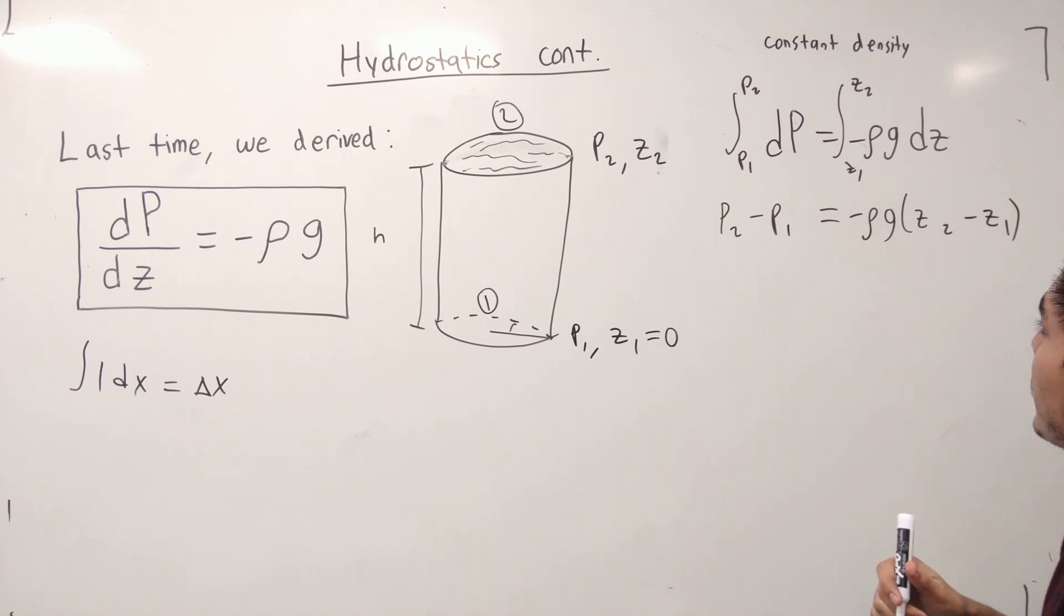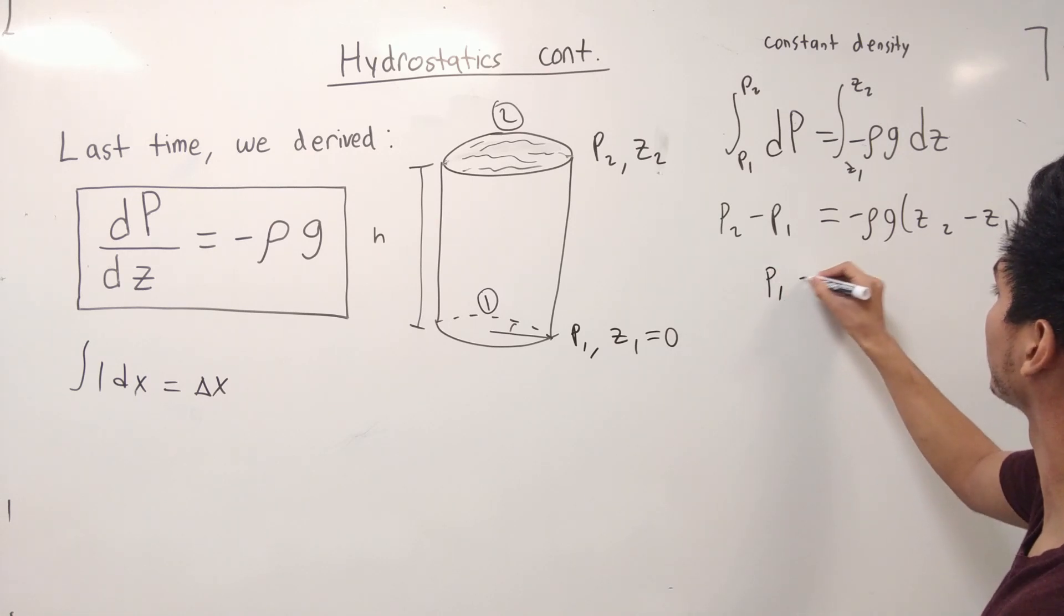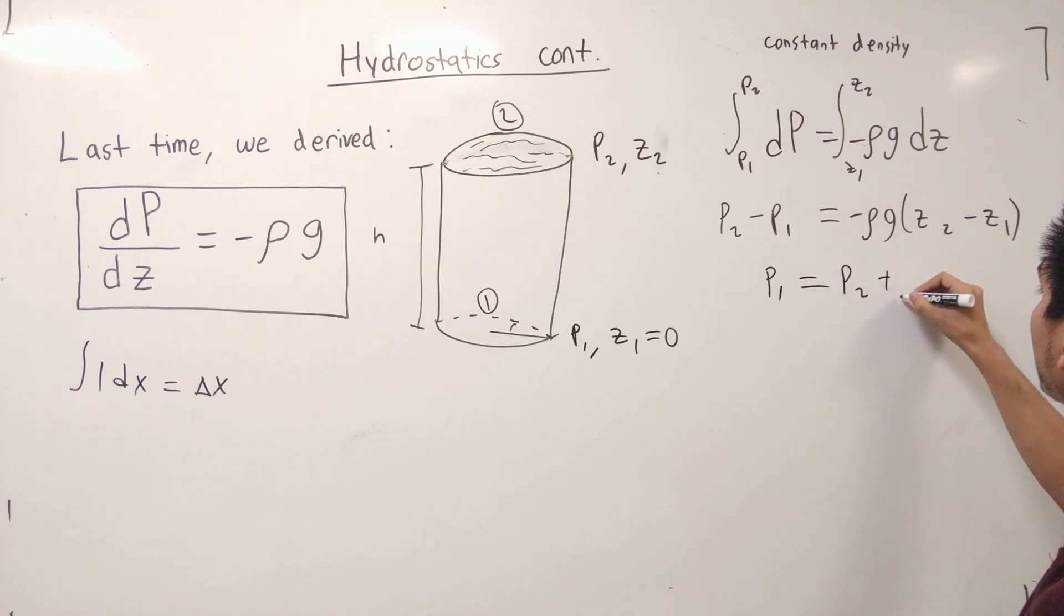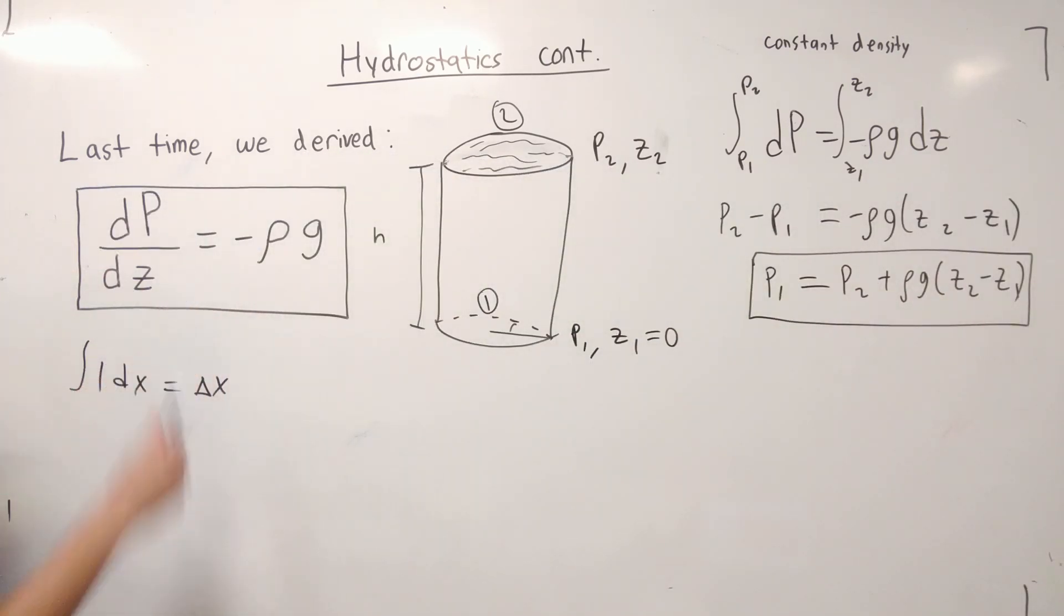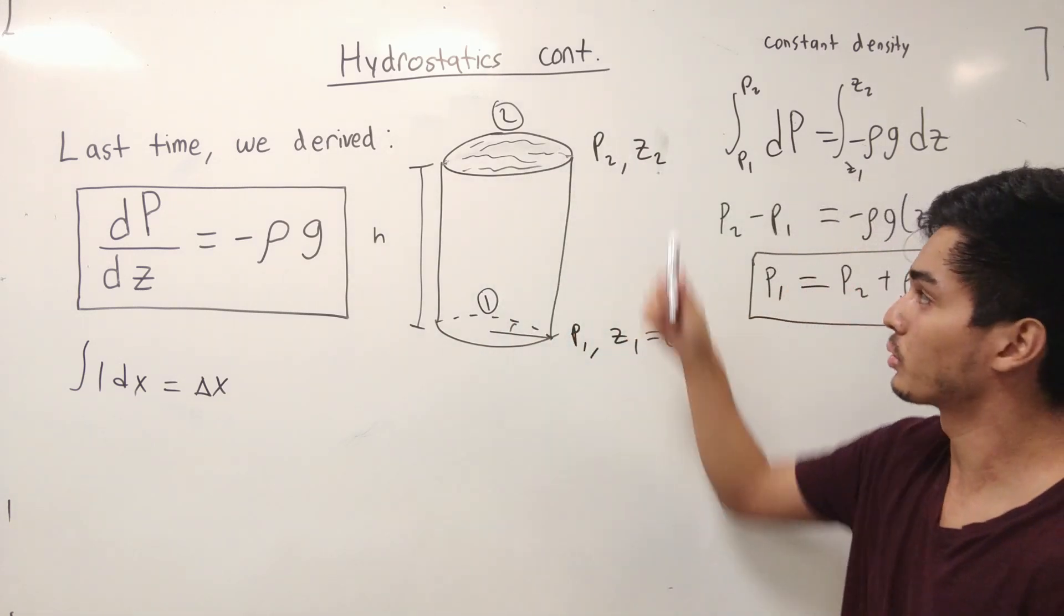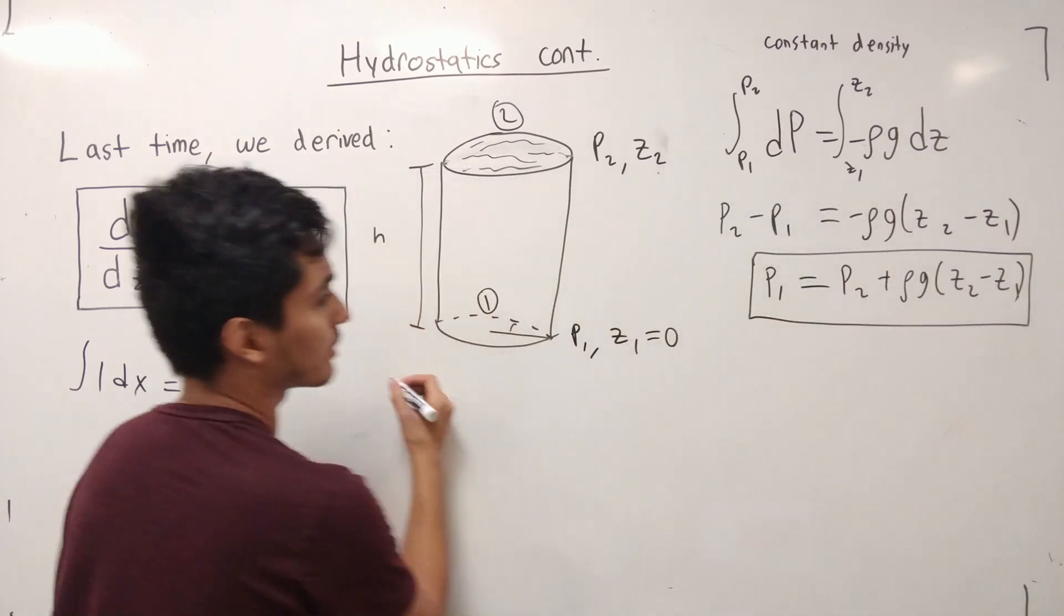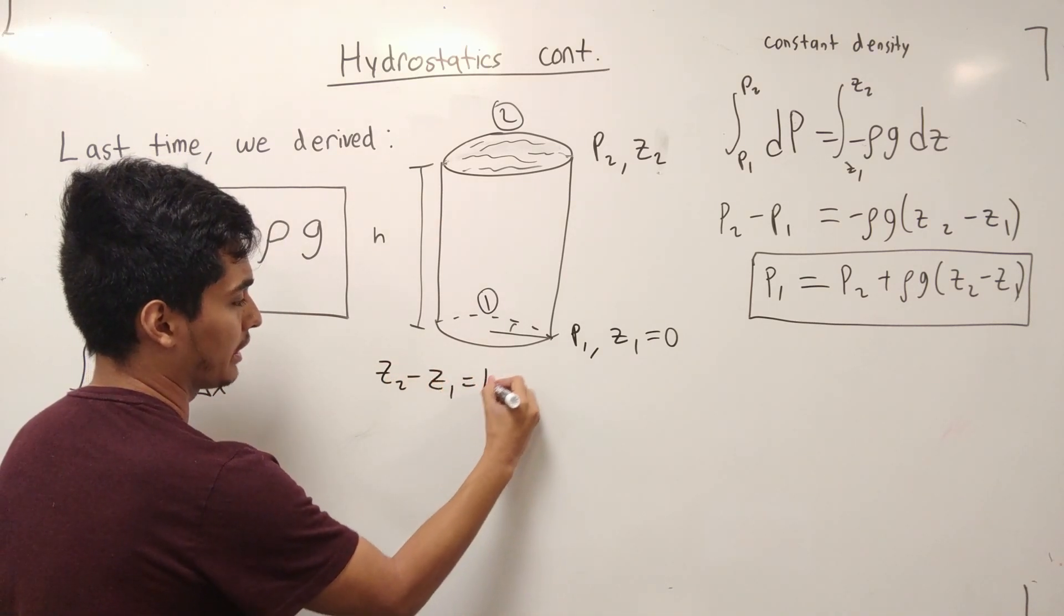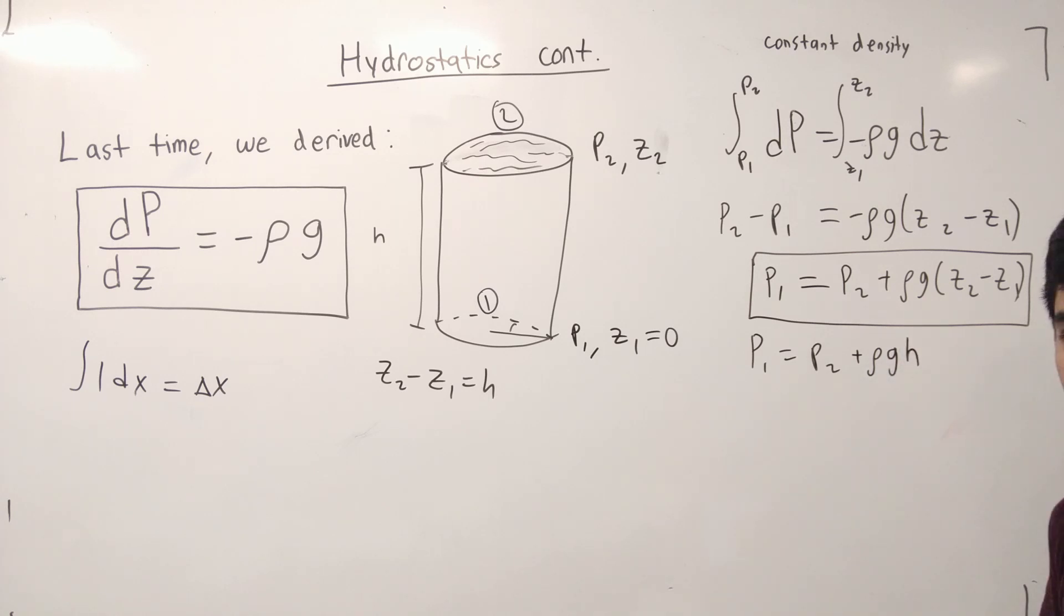Now, just rearranging some terms, we can solve for P1. I'm just going to do this in my head here. I'll just move P1 over to the other side. P1 is going to be equal to P2 plus rho g times Z2 minus Z1. Looks pretty good to me. We can box that. So what this is saying, using the hydrostatic equation, for a fluid system at equilibrium, if you know the height and the corresponding pressures, we can solve for P1 as a function of the height. And really, if we let Z2 minus Z1 equal to H, another way we can write this is going to be P1 is equal to P2 plus rho g H. Does that look familiar?